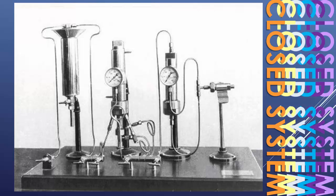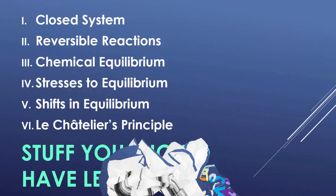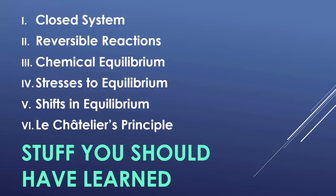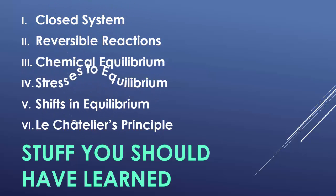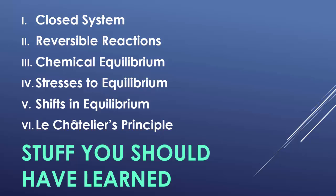Don't forget that this is all about closed systems — nothing can go in or come out. In the Haber process apparatus, everything is in tubes and cylinders; once you open the system, equilibrium is gone. In this lesson we covered closed systems, reversible reactions, chemical equilibrium, stresses to equilibrium, how to make shifts in equilibrium, and the entire idea behind Le Chatelier's principle.